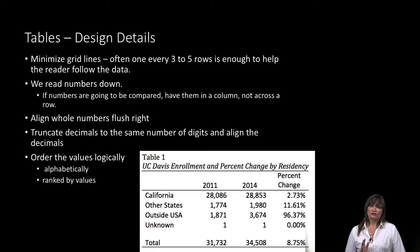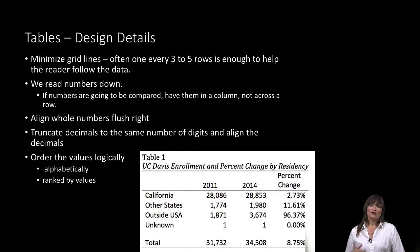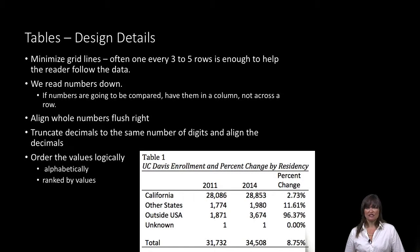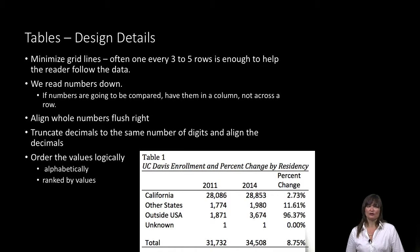You want to align whole numbers flush right. You want to make sure that any decimals are truncated to the same number of digits — APA style, two digits. And you want to align the decimals.